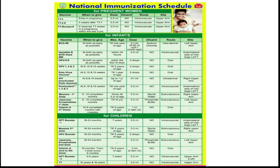DPT booster second dose is given at 5 to 6 years of age, up to 7 years. Dose is 0.5 ml, intramuscular, left upper arm. Tetanus Toxoid has two doses: first dose at 10 years and second dose at 16 years. Dose is 0.5 ml, intramuscular, upper arm.